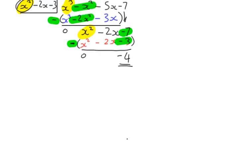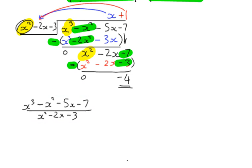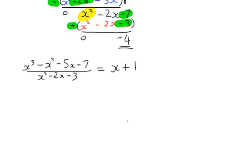We started with x cubed minus x squared minus 5x minus 7 over x squared minus 2x minus 3. We can say that equals the quotient x plus 1 — that's our polynomial function, as the question asked — plus the remainder negative 4 over the original denominator. So we have x plus 1 minus 4 over x squared minus 2x minus 3.